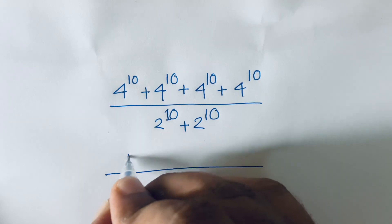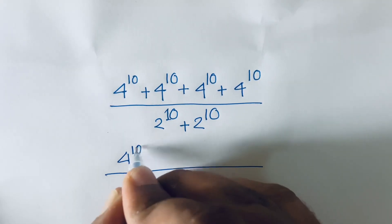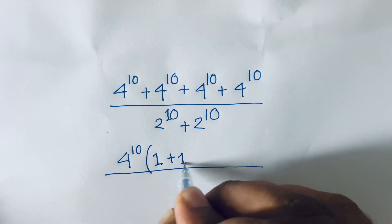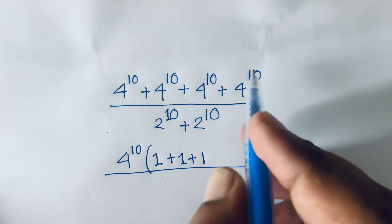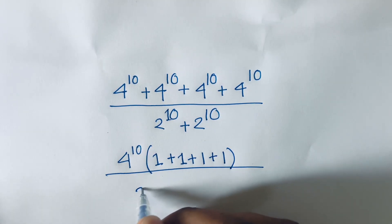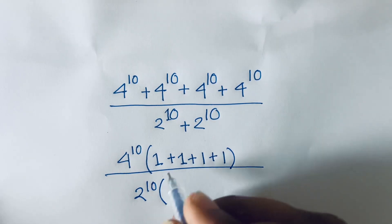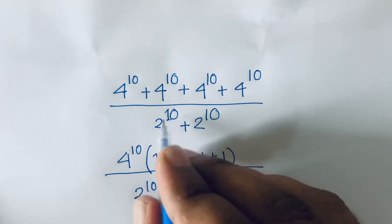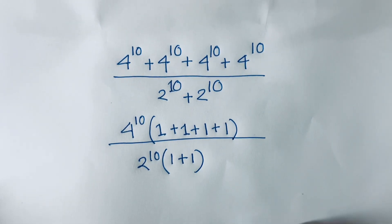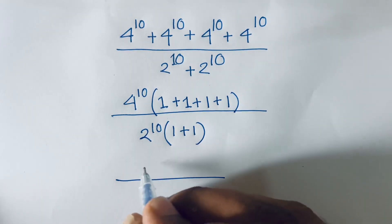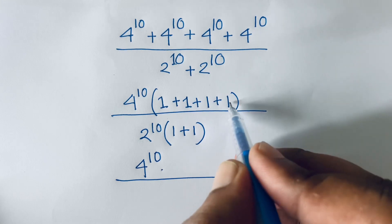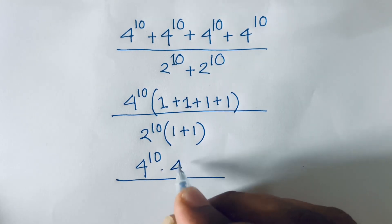First of all, 4 to the power 10 is common in the numerator. Dividing each term by it gives 1 plus 1 plus 1 plus 1. So the numerator becomes 4 to the power 10 times 4.